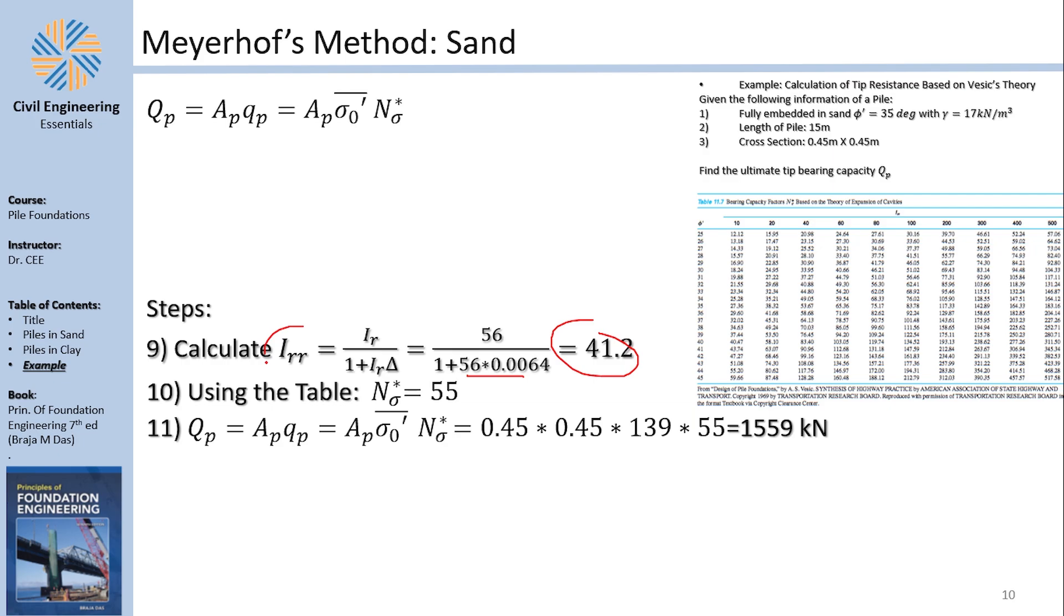From the table, finally, using Irr and using ϕ—I think ϕ was 35—let's take a look. So this is the 40 Irr, and that's the 35 friction angle. So it's like 53 point something. But of course, 53.67 is for Irr 40. So if you do some interpolation channel again, you land at 55.